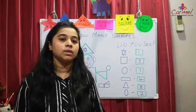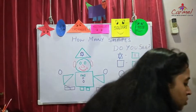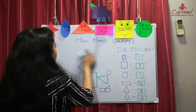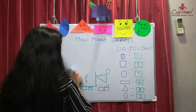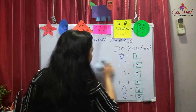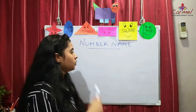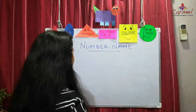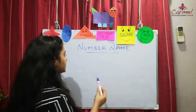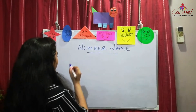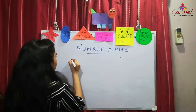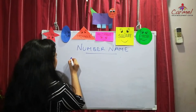Now let's move on to the number names. So far we have learned 1 and 2. Today we are going to learn 3, 4, and 5. Let's write in words. Previous class we saw 1 and 2 — let's write those words first and then move to the next number.